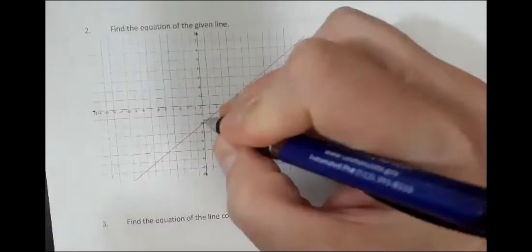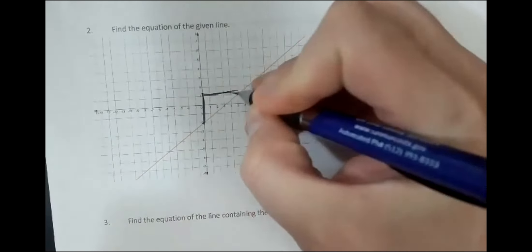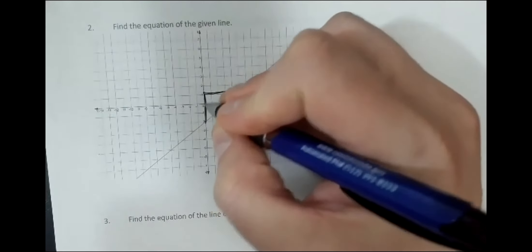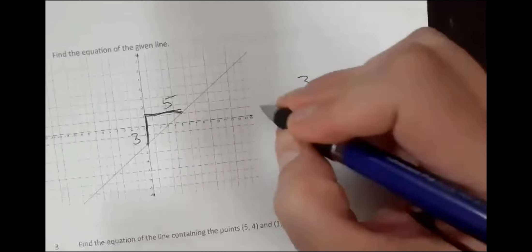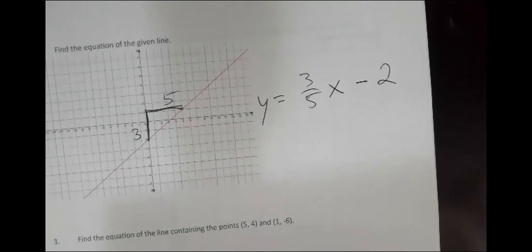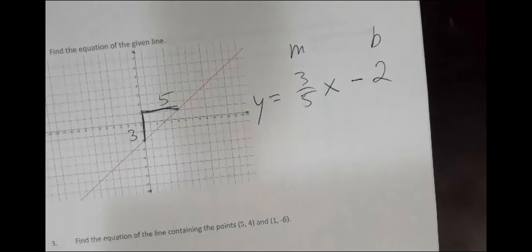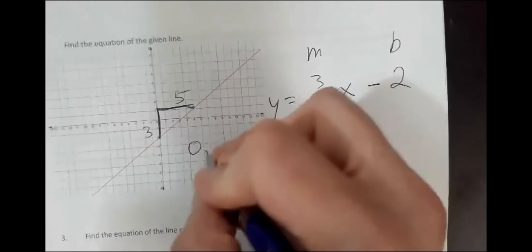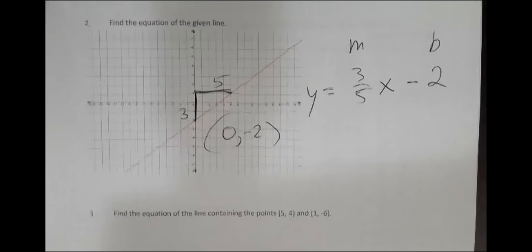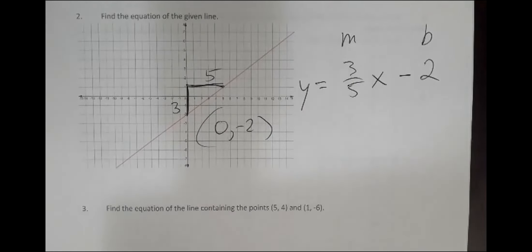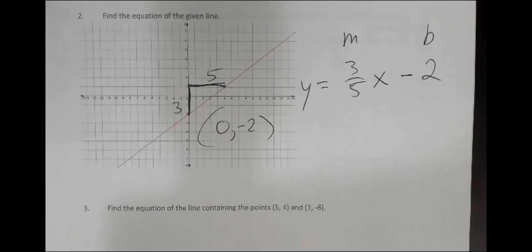Number two — this is in Test B — involves finding the equation of the line by picking off the intercept from a graph. Most people understood what they were doing; a few were way off, maybe got cross-eyed looking at the graph.